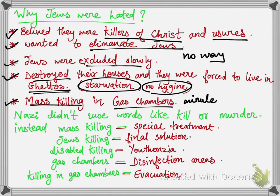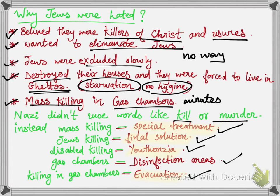The Nazis did not use words like 'kill' or 'murder' in their day-to-day or political language. Instead, for mass killing they said 'special treatment'; for killing Jews they said 'the final solution'; for killing the disabled they said 'euthanasia'; for gas chamber killing they said 'evacuation'; and the gas chambers were called 'disinfection areas'.